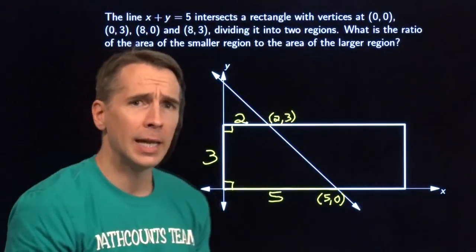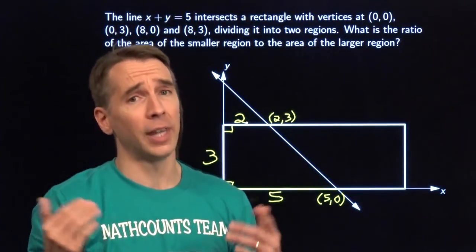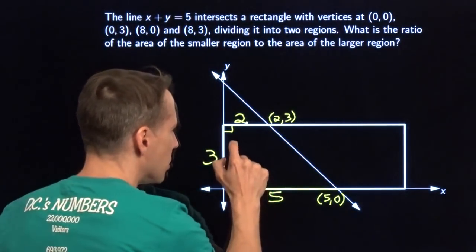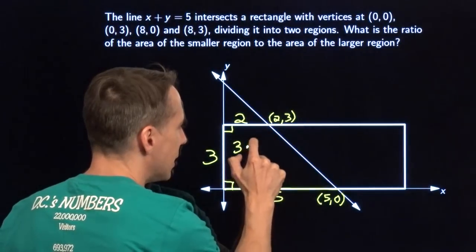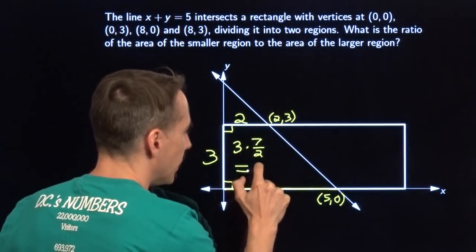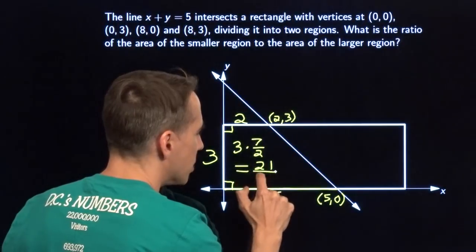Now we have the two bases of our trapezoid. We can figure out what the median is. And the area is just the height times the median. Now the median, you take this 5, you add on the 2, you get 7, you take half of that. So the median is 7 halves. So our area is 3 times 7 halves, which equals 21 over 2.